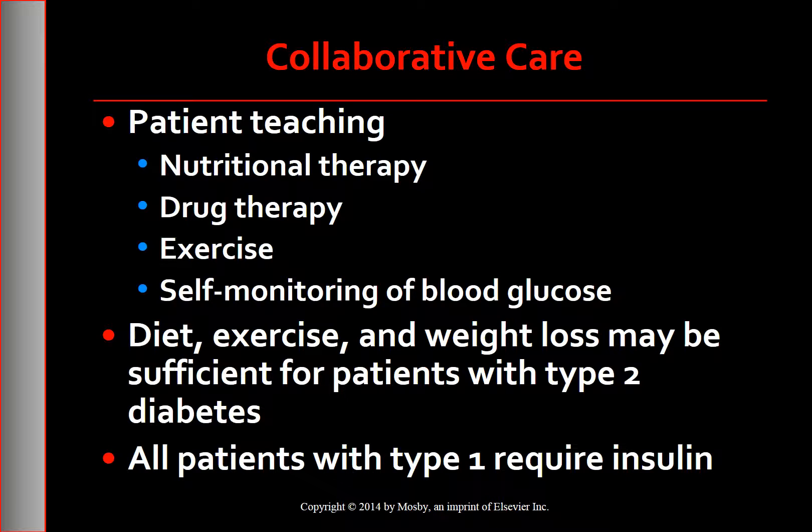Nutritional therapy, drug therapy, exercise, and self-monitoring of blood glucose are tools used in the management of diabetes. For some people with type 2 diabetes, a regimen of proper nutrition, regular physical activity, and maintenance of desirable body weight is sufficient to attain an optimal level of blood glucose control. However, for the majority, drug therapy is necessary. The major types of glucose-lowering agents are insulin, oral agents, and non-insulin injectable agents. All individuals with type 1 diabetes require insulin.